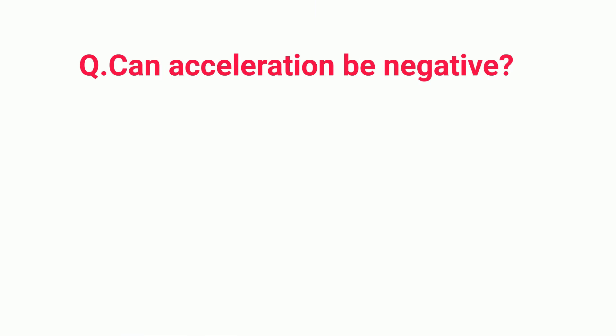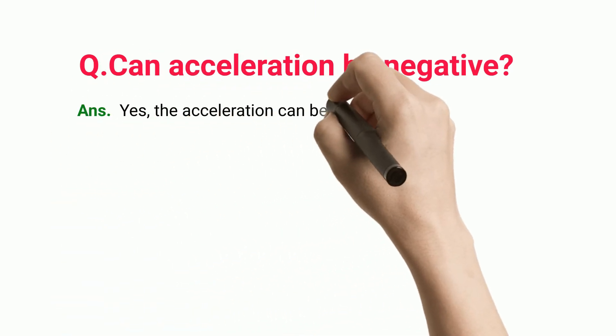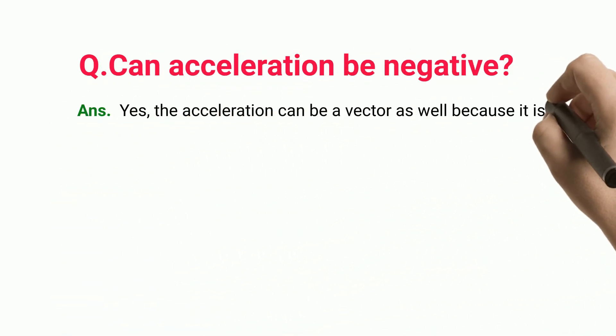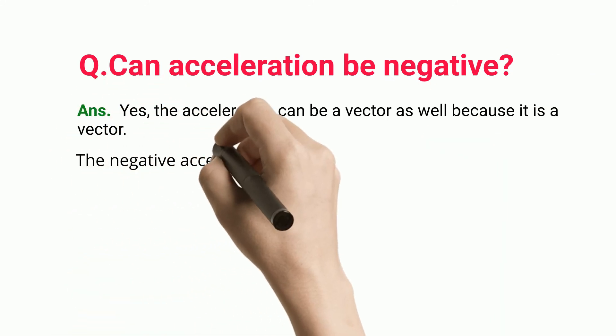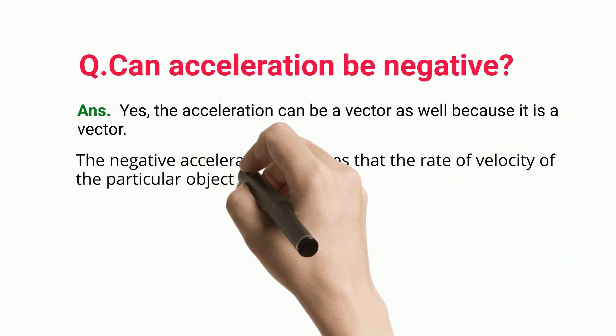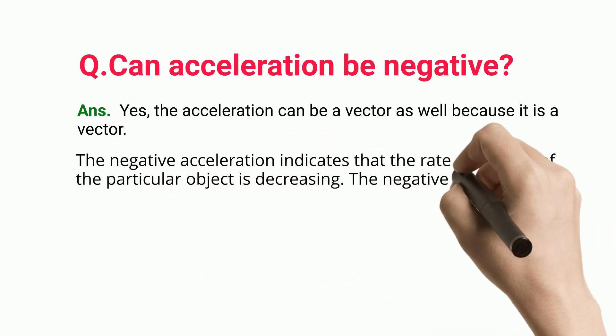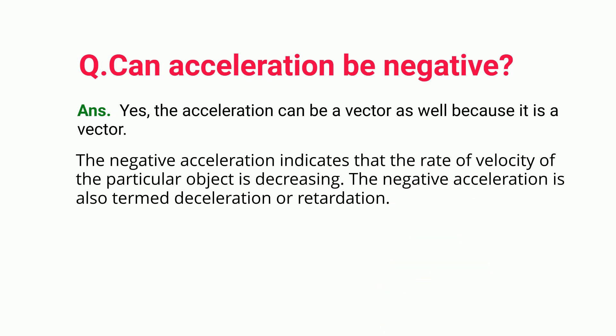Can acceleration be negative? Yes, acceleration can be a vector quantity. Negative acceleration indicates that the rate of velocity of the particular object is decreasing. Negative acceleration is also termed deceleration or retardation.